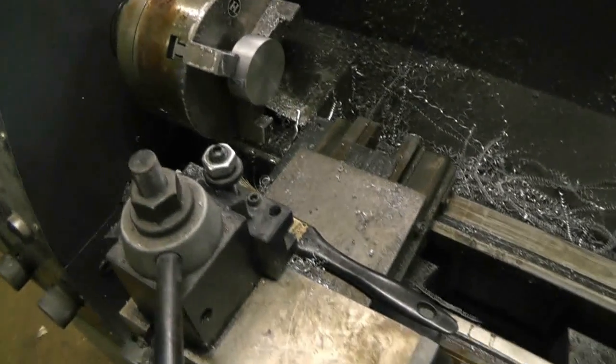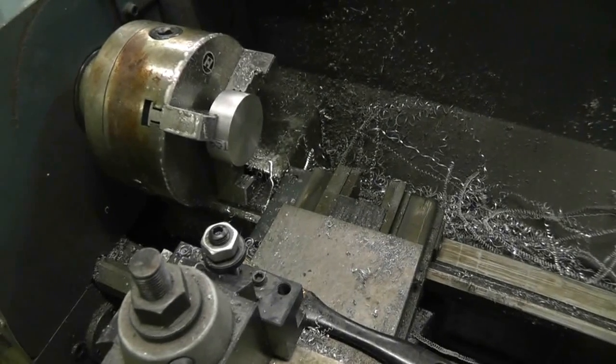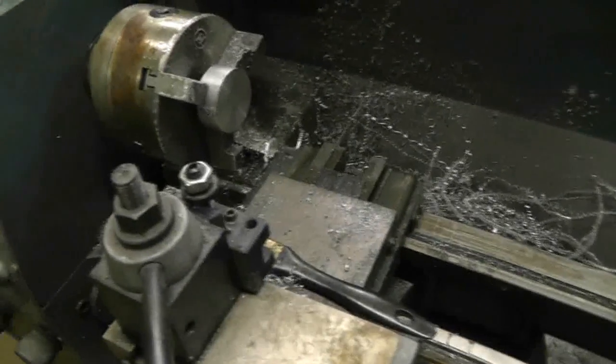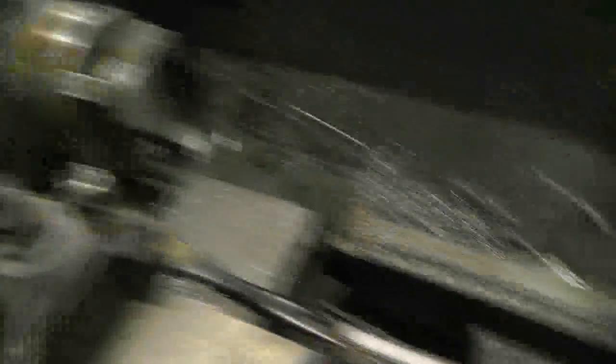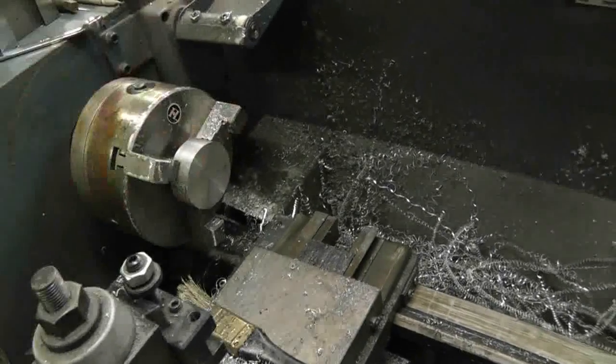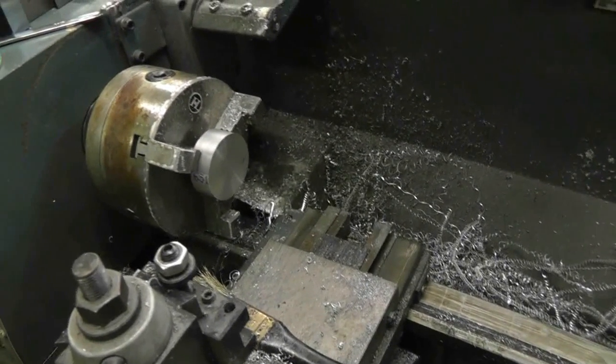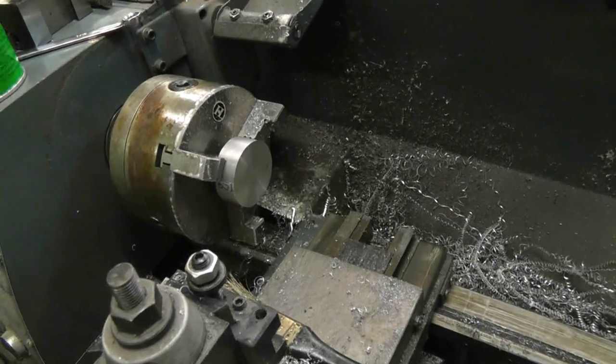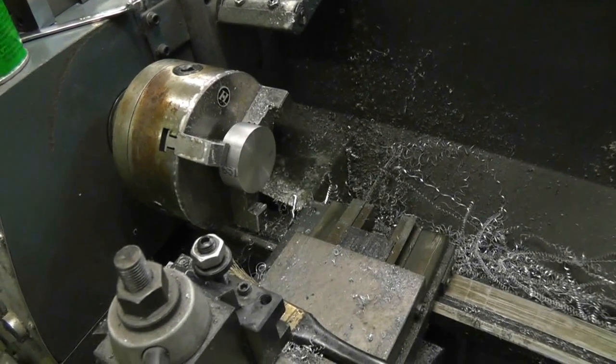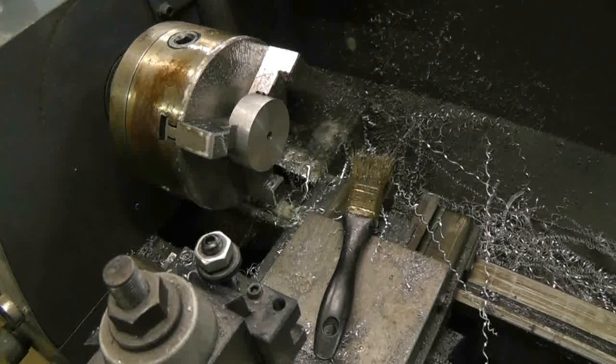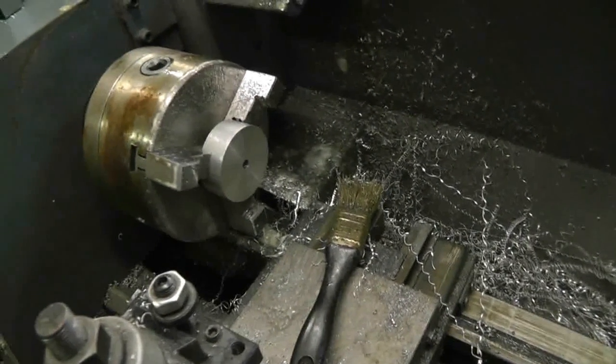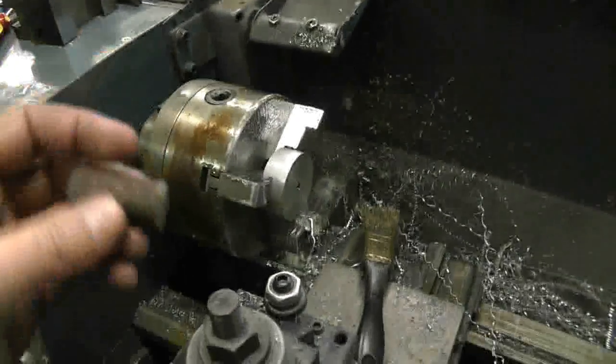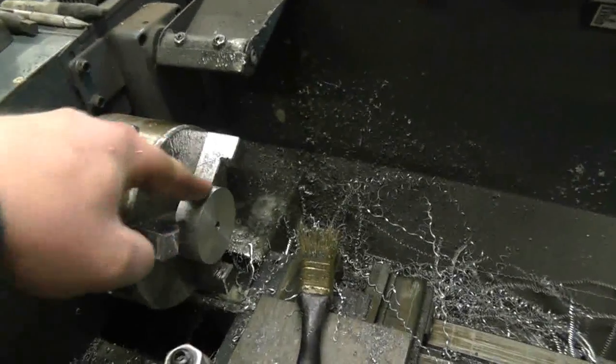So I've faced off this end at 3/4 of an inch. Now I'm going to drop a center drill into the tail stock and drill it out to start a hole. Then I'll go 1/8, probably 5/16, then to 15/64, and then I'll ream it to a quarter inch. I step drilled this and reamed it up to a quarter.